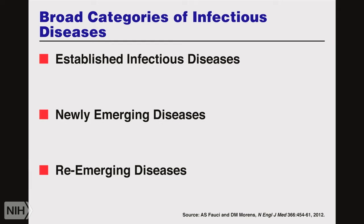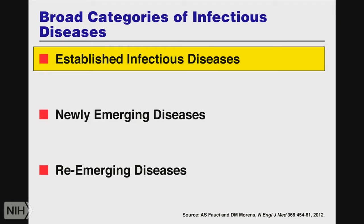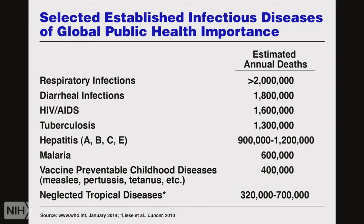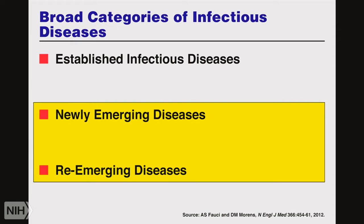I like to categorize things into different buckets: established infectious diseases, new infectious diseases, and re-emerging infectious diseases. An established infectious disease is one you can reasonably accurately predict in terms of global morbidity and mortality from year to year — respiratory illnesses killing about 2 million a year, diarrheal disease about 1.8 million. HIV AIDS, after 34 years, has graduated into an established infectious disease. TB, hepatitis, and malaria are also established. We know all about those.